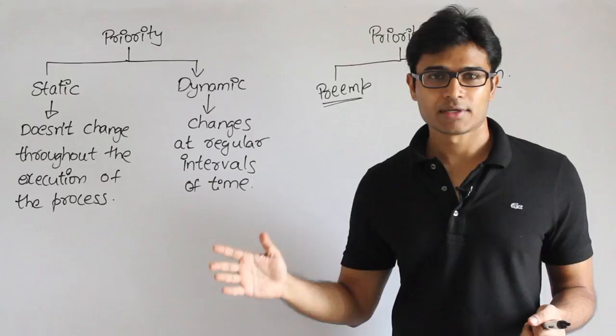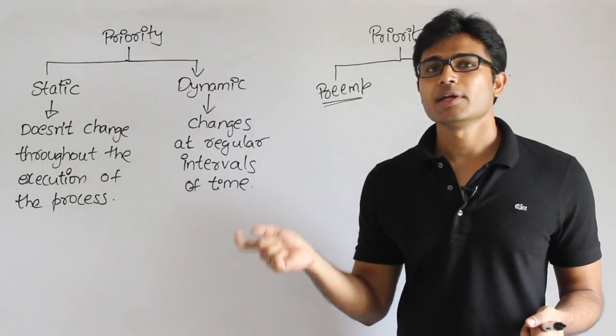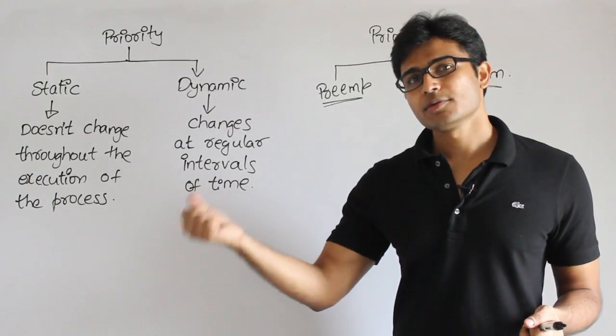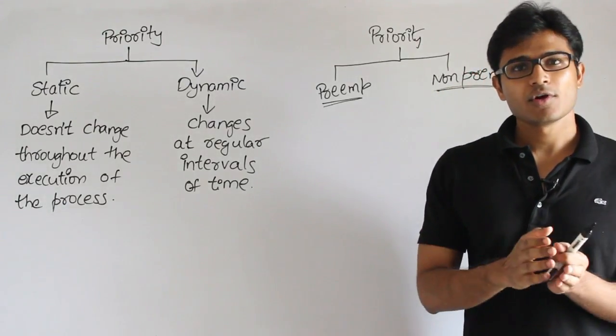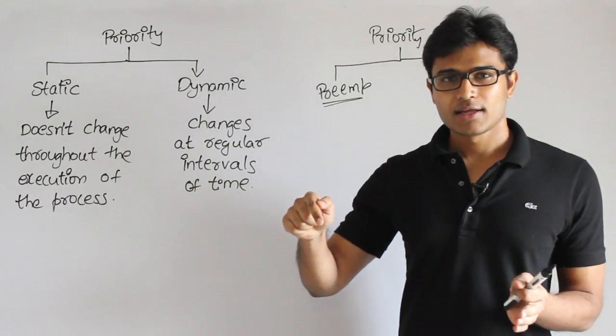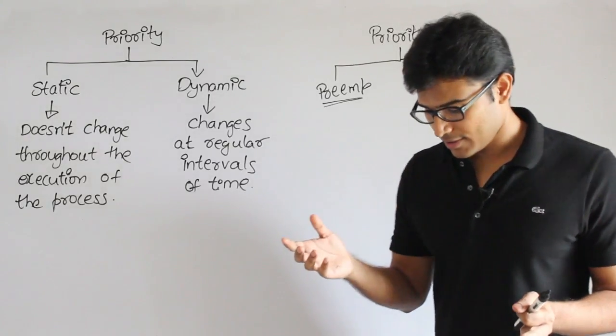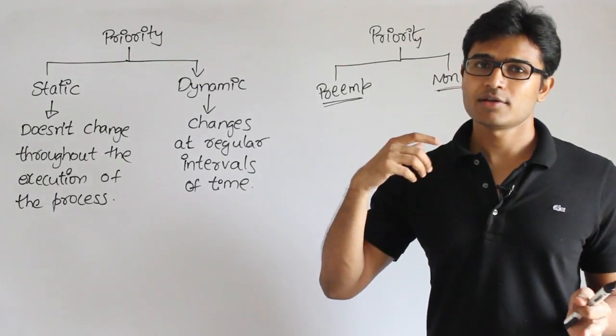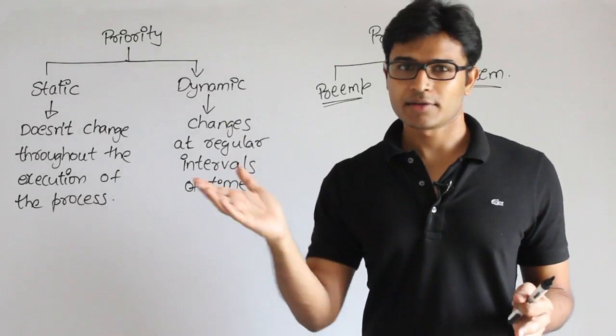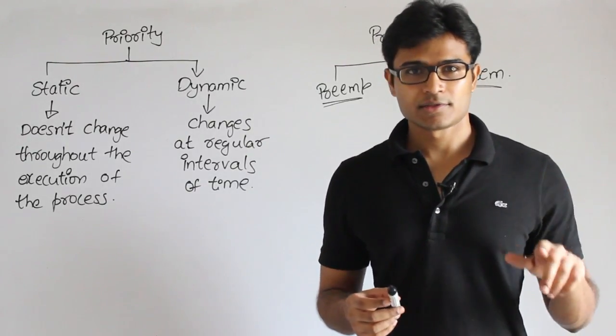And preemptive means we are going to choose a process which is having highest priority and we are going to run it until its completion, or if any process with higher priority is available suddenly, then we will stop it and run the other one. Okay, better I will take some examples and explain you this concept. It is very simple, not much complex.